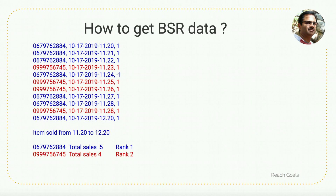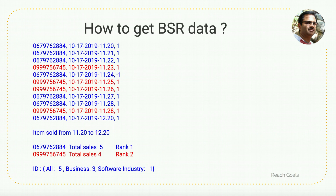The sanitizer figures out the right data and sends it to the Redis cluster. The output will be stored with an ID as the key — for example, across all books the category might be 'All' with a ranking of five; within the 'Business' subcategory it ranks three; within the 'Software' subcategory it ranks one, where Business and Software are subcategories. That is how the data goes into the Redis cluster. From the UI, a web service takes the item ID as input, queries the Redis cluster, and returns the BSR output to the UI. That is how the system works and how the BSR data is calculated.